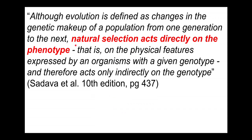The textbook Sadava puts it this way: although evolution is defined as changes in the genetic makeup of a population from one generation to the next, natural selection acts directly on phenotypes — that is, on the physical features expressed by an organism with a given genotype — and therefore acts only indirectly on the genotype. This is a key idea: the environment, parasites, predators, sunlight — aspects of the environment that select for different traits — are selecting on the phenotype.